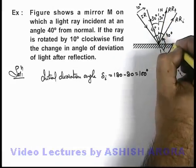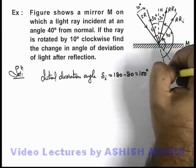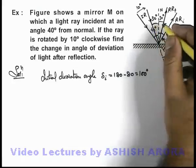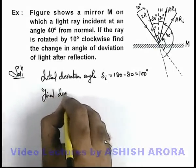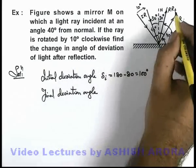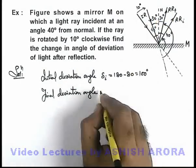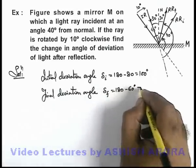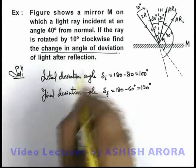The deviation angle of reflected ray from the initial direction of incident ray can be written as 180 minus 60 degrees. So final deviation angle of light ray would be the angle between the final reflected ray and the final incident ray after rotation. This delta final we can write as 180 minus 60 degrees, that will be 120 degrees.